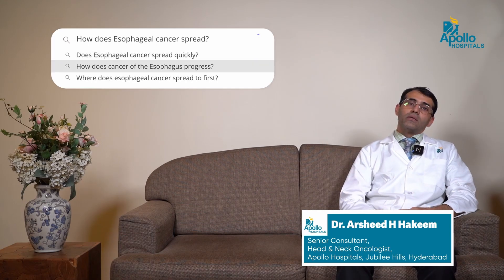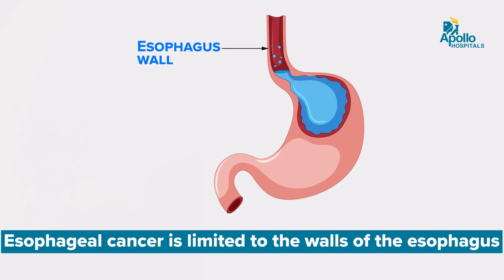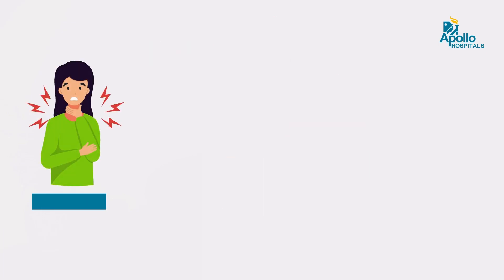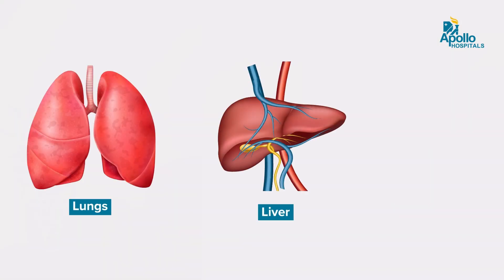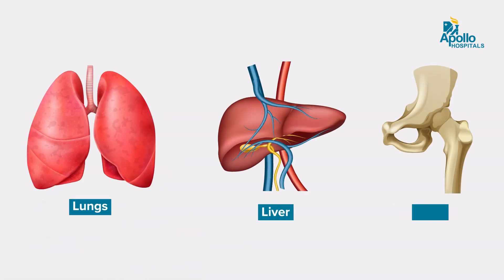How does esophageal cancer spread? Initially it is a localized disease, present just in the walls of the esophagus. If not treated, it may progress to involve surrounding structures, cause hoarseness, or cause lymph nodes in the neck or mediastinum, or cause distant metastasis. The most common metastasis is to the lungs, liver, and bones.